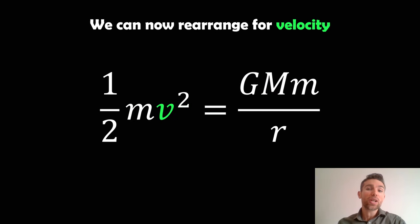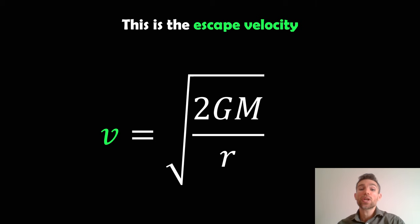So we can rearrange that now for v. What we want is the escape velocity, so if we actually rearrange for v, that will give us the minimum initial velocity we need to overcome that gravitational potential energy. If we rearrange that, we end up with this equation: v equals the square root of 2GM over r. That's our escape velocity.